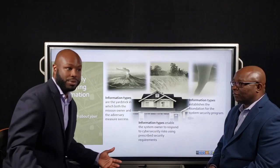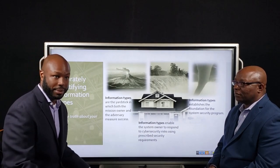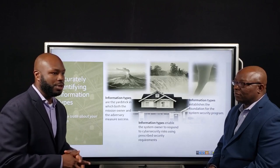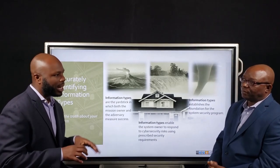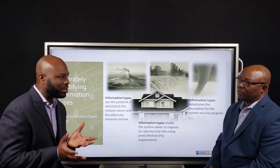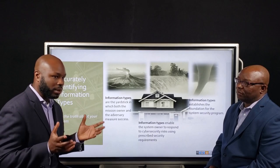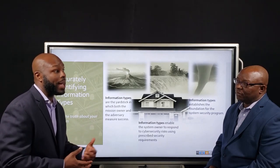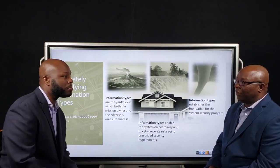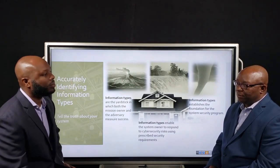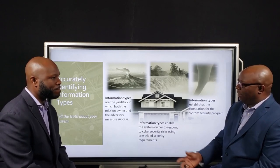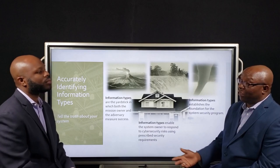NIST 800-60, Volume 2 lists out all your information types. And if you, as a system owner, truly understand your operating environment, then you can use that to look at your mission, look at how your system is used, and what's important to your system's operation. With that information, you can begin selecting which pieces of information actually exist in your system and what their impact is if that information is compromised. The information types are prescribed according to the impact in the event that you lost the confidentiality, integrity, or availability of that information type.